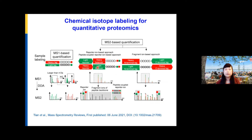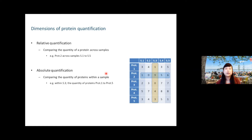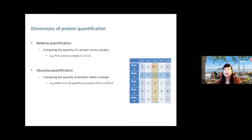If we step back to think about protein quantification — relative versus absolute — consider a matrix with five samples and five proteins. Relative quantification means comparing the quantity of a protein across different samples. For example, we might conclude that in sample three, there are nine times more of protein two compared to sample one. For absolute quantification, we focus on the absolute abundance or concentration of a protein within a sample, such as the amounts of proteins one through five in sample three.